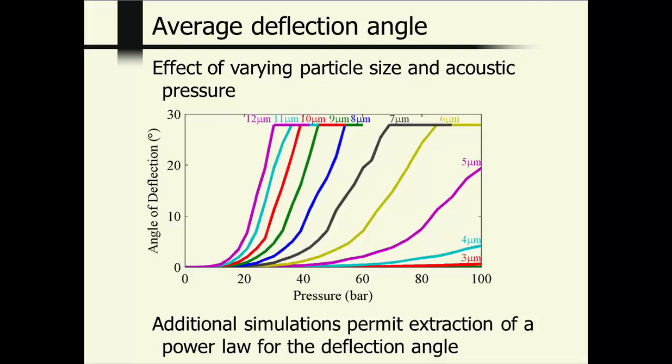And what you see is that, as expected, the larger particles are more rapidly deflected. When they hit the edge of the channel, that's, of course, the maximum deflection angle. Smaller particles are less readily deflected. If we do those simulations many times and for additional parameters such as acoustic wavelength and water velocity, we can extract a power law for the average deflection angle.